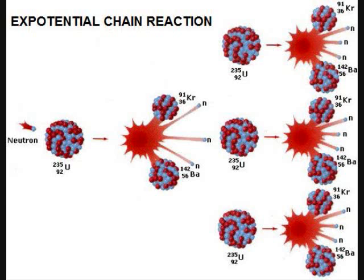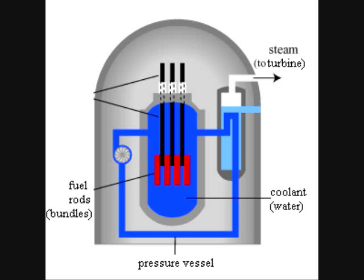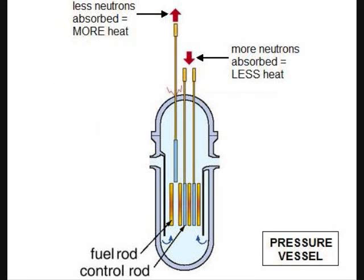An incredible amount of heat is released when one atom splits into two. Inside the nuclear power plant, there are small pellets of enriched uranium arranged into bundles of long rods. These rods are then submerged into water, which acts as a coolant inside a pressure vessel. To prevent the plant from overheating, control rods absorb neutrons along with the uranium bundles. They can be lowered into the bundle to absorb more neutrons, creating less heat, or raised out to absorb fewer neutrons and produce more heat.